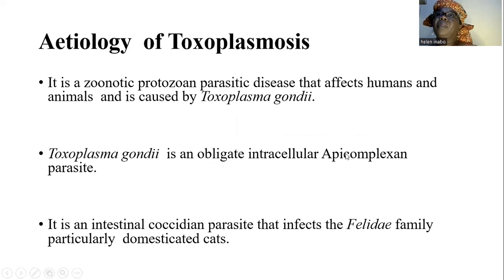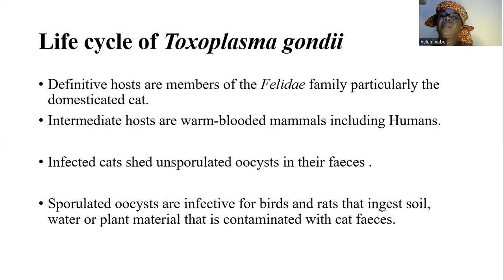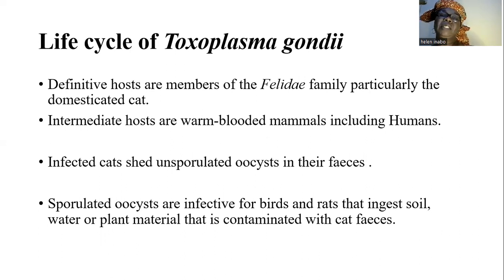It is an intestinal coccidian parasite that infects the Felidae family, particularly domesticated cats. The life cycle of Toxoplasma gondii oscillates between definitive hosts and intermediate hosts.